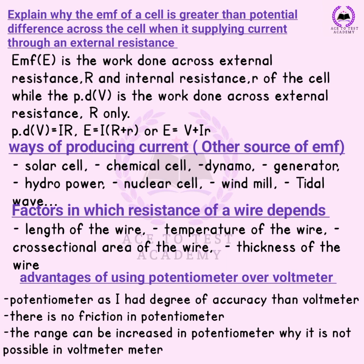Sources of EMF or ways of producing current include: solar cell, chemical cell, dynamo, generator, hydropower, tidal wave, and so on. The factors which resistance depends on include: length, thickness, temperature, cross-sectional area, and resistivity.